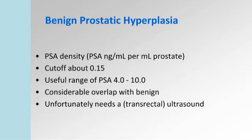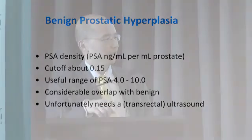PSA density is difficult to calculate without an ultrasound of the prostate. If your PSA density is higher than 0.15, there is a higher index of suspicion for prostate cancer. This is quite useful in that uncertain range of 4 to 10, before cancer becomes metastatic. Unfortunately, it requires a transrectal ultrasound, and once you're doing that, you may as well do biopsies at the same time to clinch the diagnosis — so it is a somewhat invasive approach.